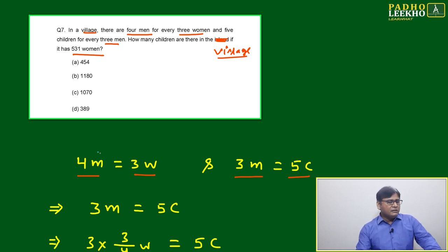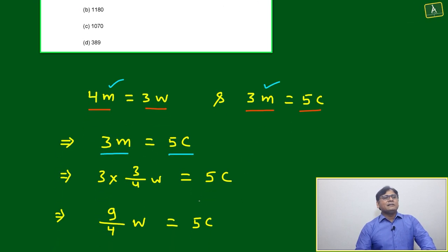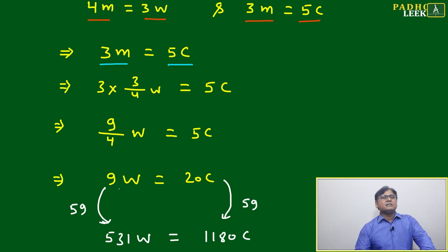Very simple, we know this is school level. Three men equal to five children, then three into three by four w - you will do this calculation.